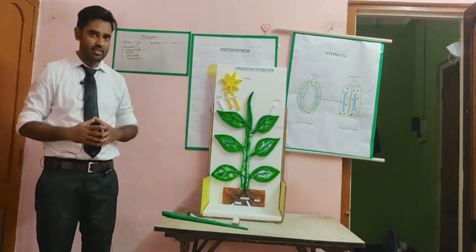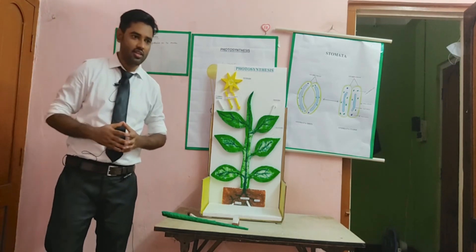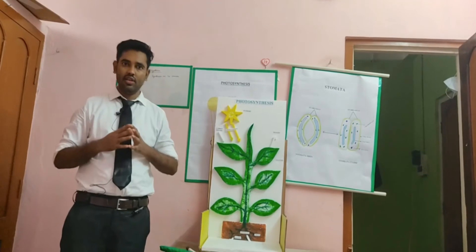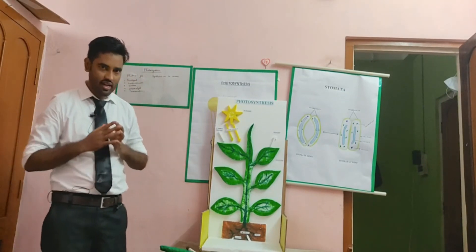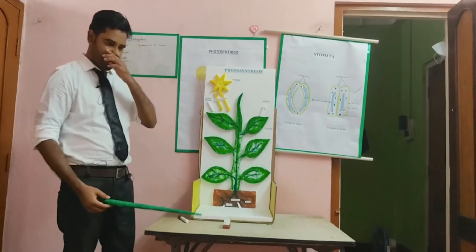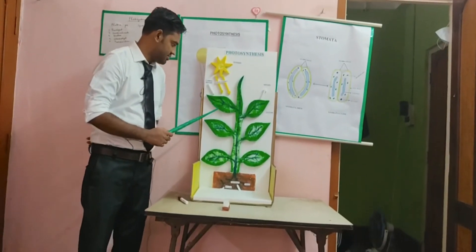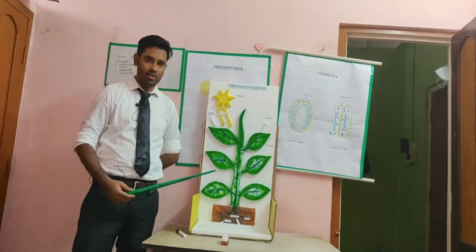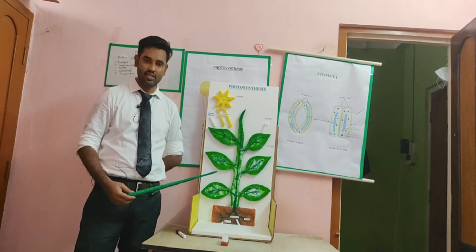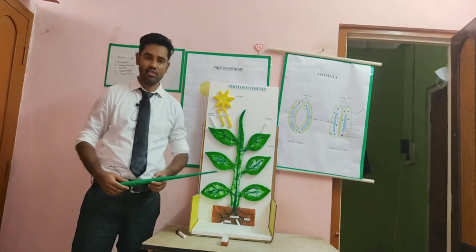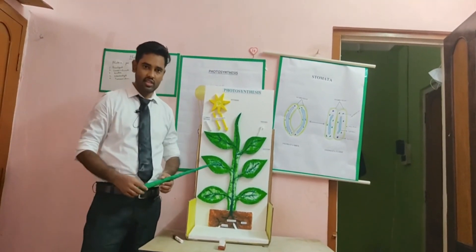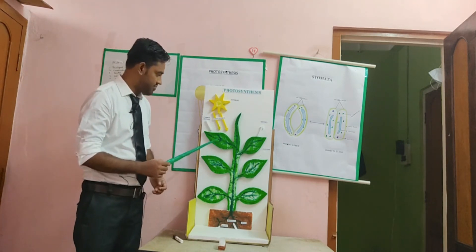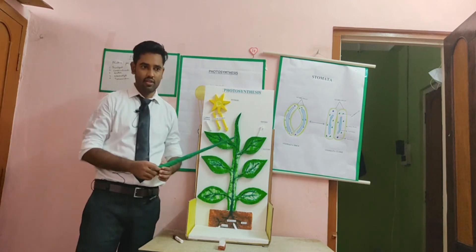Now let's discuss chlorophyll. Chlorophyll is very important for the process of photosynthesis — it is a green pigment. Look at the model — chlorophyll is present inside the leaf. Can you tell me where the photosynthesis process takes place in a plant? The site of photosynthesis is the chloroplast.